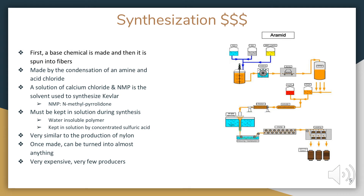The synthesis of Kevlar is very similar to that of nylon. For a really simple version, a base chemical is made and then they spin it into fibers. It's made from an amine and acid chloride, held in solution by concentrated sulfuric acid. But once it's made it can turn into almost anything.